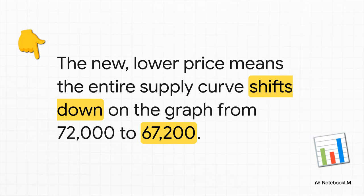So what does this mean for our graph? Well, it means that whole flat supply line literally gets pulled downward. It shifts from the old price of 72,000 down to the new lower price of 67,200. The car is now actually cheaper for people to buy in the local market.